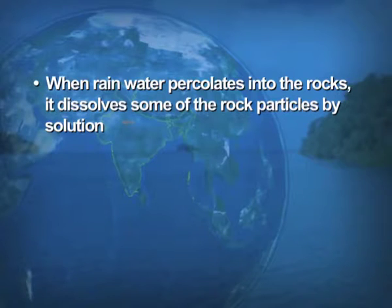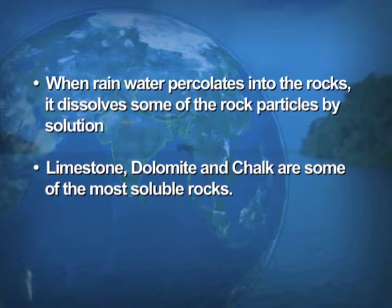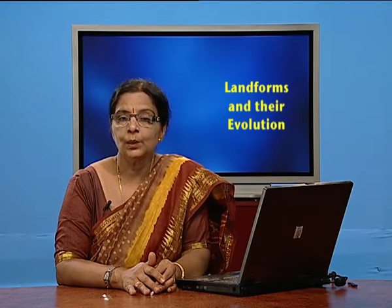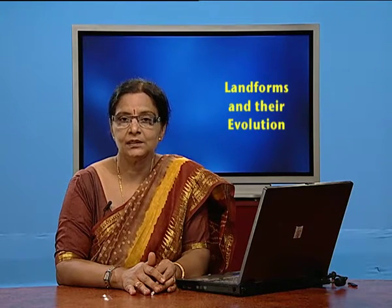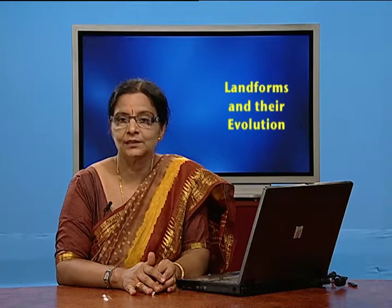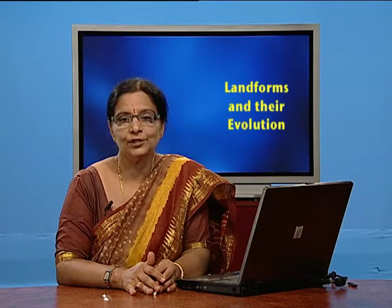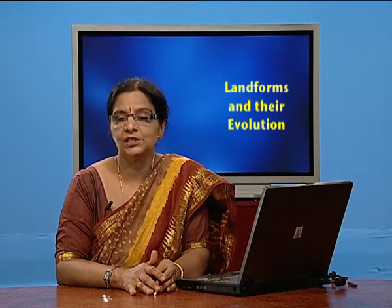Pure water is not a good solvent, but it becomes an active solvent when it comes in contact with carbon dioxide gas. When rainwater percolates into the rocks, it dissolves some of the rock particles by solution. Limestone, dolomite, and chalk are some of the most soluble rocks, easily dissolved in rainwater containing carbon dioxide. When rainfall comes on the surface of the earth, the rainwater travels through the atmosphere where the gas gets added, enabling solution action in limestone-containing rocks.